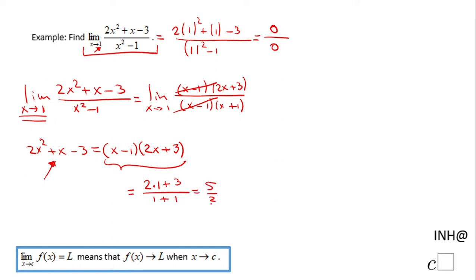over 2. So the limit when x approaches 1 of 2x² + x - 3 over x² - 1 is 5 over 2.